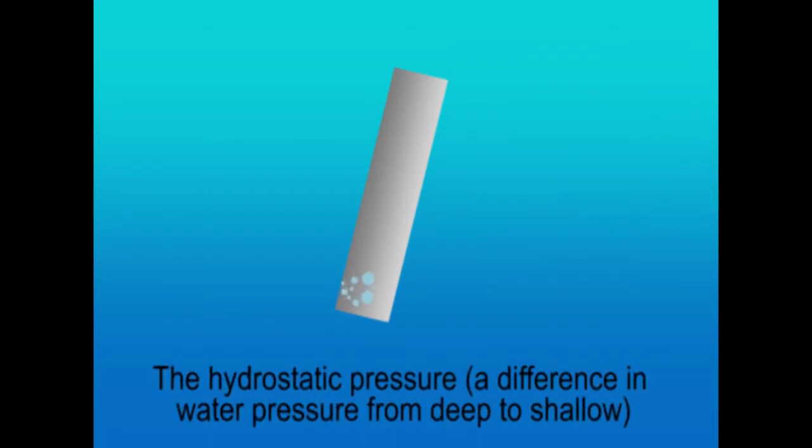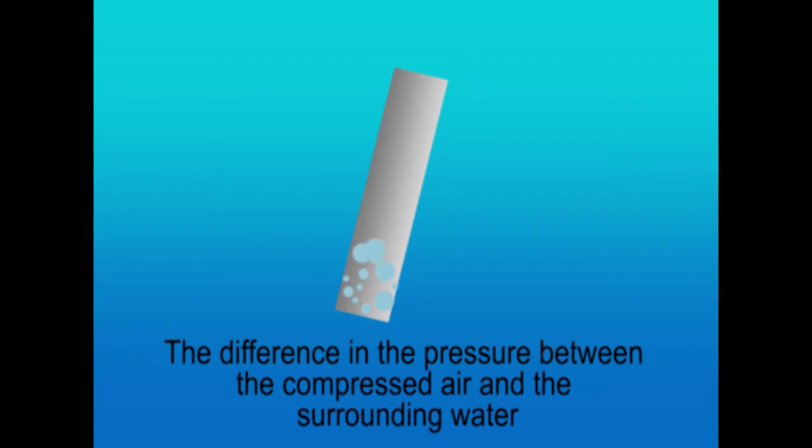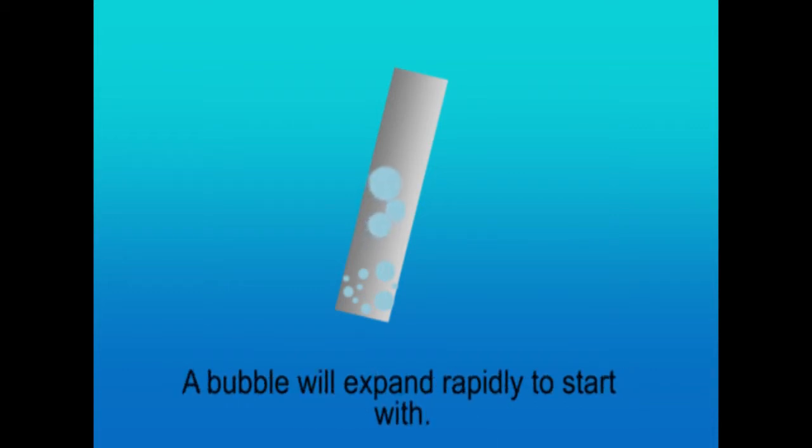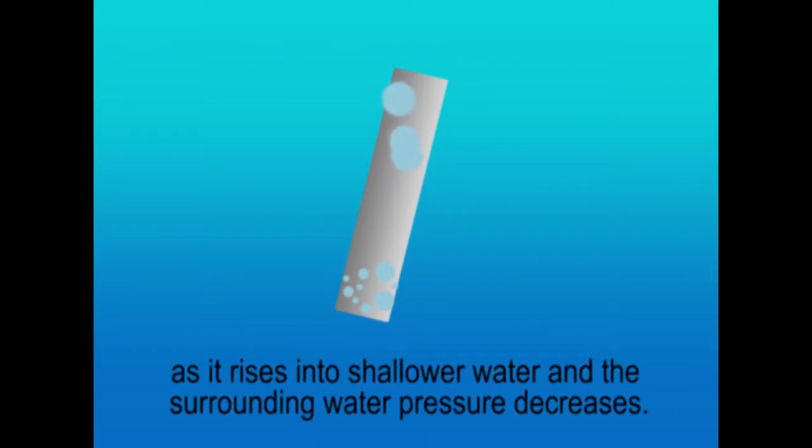The hydrostatic pressure, the difference in water pressure from deep to shallow, is what causes the air bubbles in the pipe to accelerate upwards. The difference in pressure between the compressed air and the surrounding water is what causes the air to expand as it moves up the pipe. A bubble will expand rapidly to start with if it is at a higher pressure than the deep water, then it will continue to expand more slowly as it rises into shallower water and the surrounding water pressure decreases.